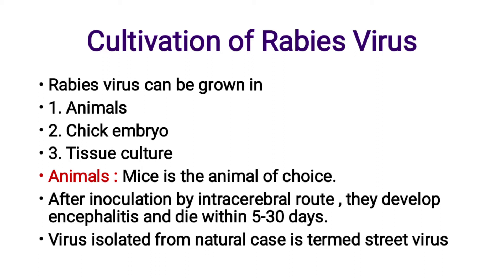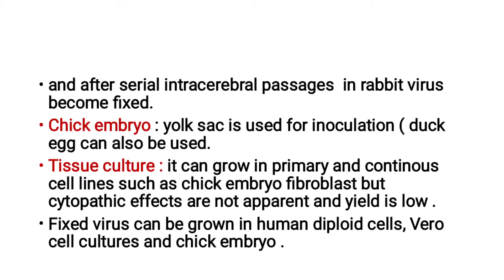Virus isolated from a natural case is termed street virus. After serial intracerebral passages in rabbit, the virus is known as fixed virus. For chick embryo cultivation, the yolk sac is used for inoculation; duck eggs can also be used. The next method is tissue culture.